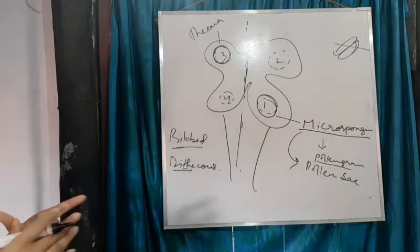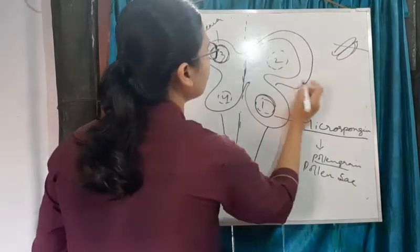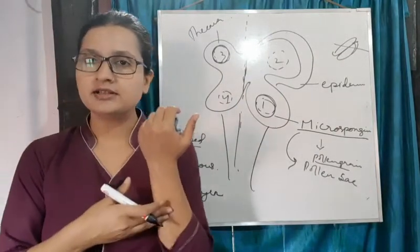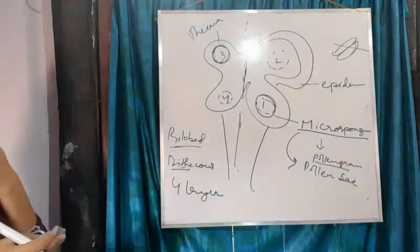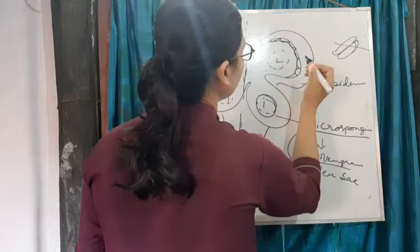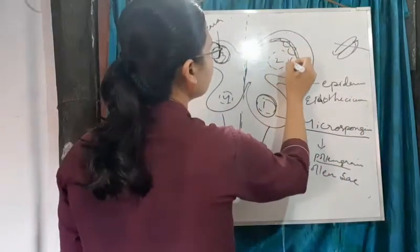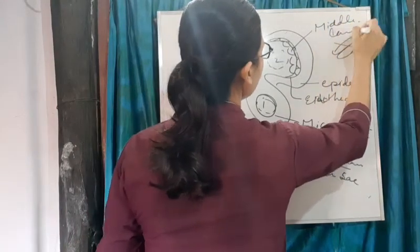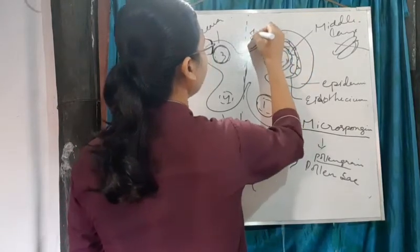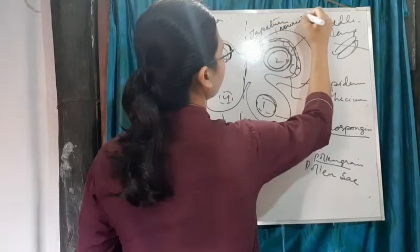Now, there are four layers in the microsporangium. The outermost layer is called the epidermis - just as we animals have skin called epidermis, plants also have an outer layer called epidermis. After epidermis comes the endothecium. Then comes the middle layer. The microsporangium is surrounded by a layer called the tapetum, which provides nourishment to the microsporangium.